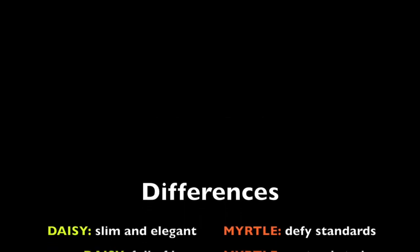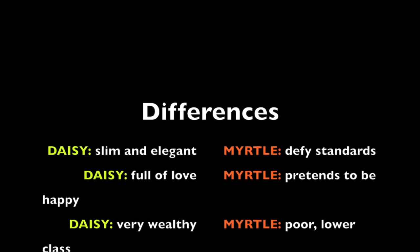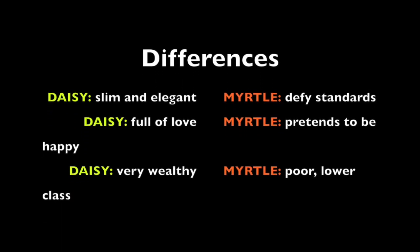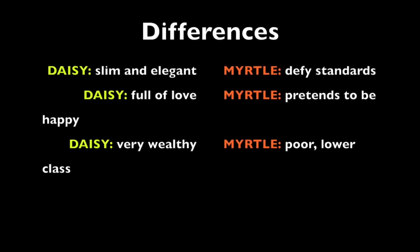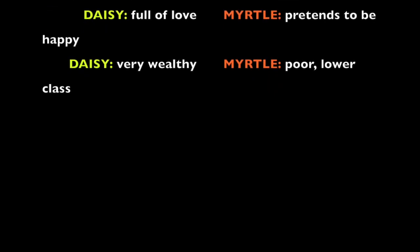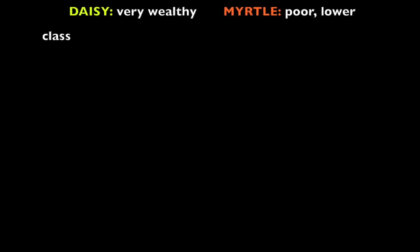Myrtle, on the other hand, tends to appear happy even though she clearly is not, because she is having an affair with Tom and truly believes he will leave Daisy for her. Lastly, Daisy is wealthy and doesn't have much financial trouble. However, Myrtle and George struggle with money, which is hard for Myrtle because of her greediness and urge to have a lot of money.